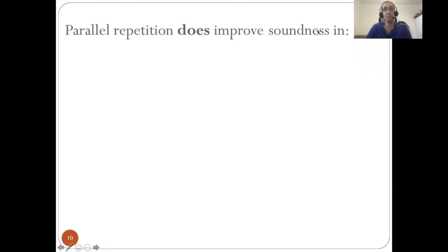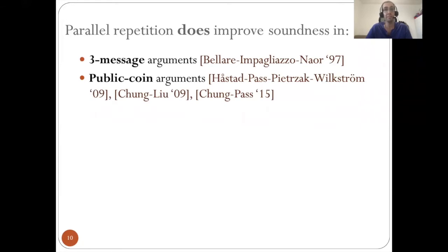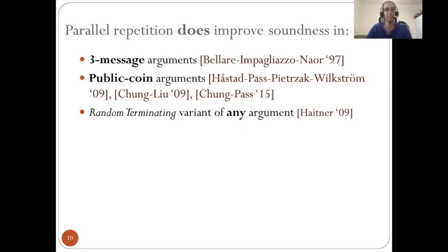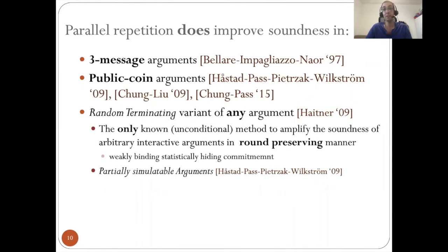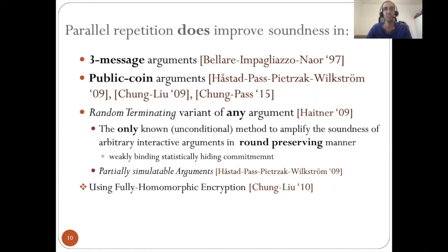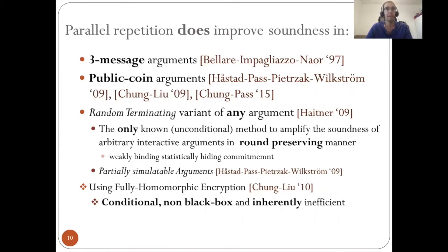On the positive side, parallel repetition does improve soundness in some special cases: free message arguments, public coin arguments — both at an optimal rate — and also the random terminating variant of any argument. Along with parallel repetition, this is the only unconditional method to amplify soundness of arbitrary arguments, including the binding of statistical hiding commitments. Also, partially simulatable arguments capture the property of all known arguments where parallel repetition does improve soundness. There is another method using fully homomorphic encryption that makes parallel repetition reduce soundness at an optimal rate, but it is conditional and inherently inefficient.